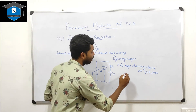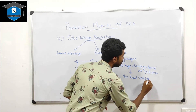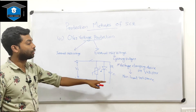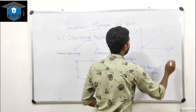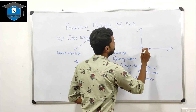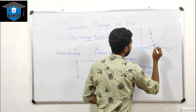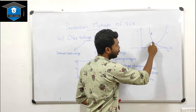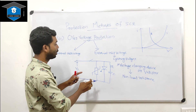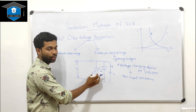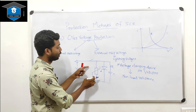The voltage clamping device is a non-linear resistance. In a linear resistance, the current versus voltage relationship is linear. In a non-linear resistance, as voltage increases, the resistance value decreases — it is a falling resistance. In normal conditions, the voltage across the SCR is minimum, so the resistance of the clamping device is maximum.